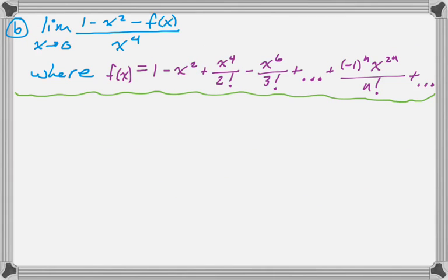So part b is we need to evaluate this limit where f of x is the series that we found above. You could actually, I mean it says that you need to use your answer to part a. You could have done this with L'Hopital's rule, I think. I didn't try it because it would probably be hideous because of the product rule that ends up showing up pretty quickly.